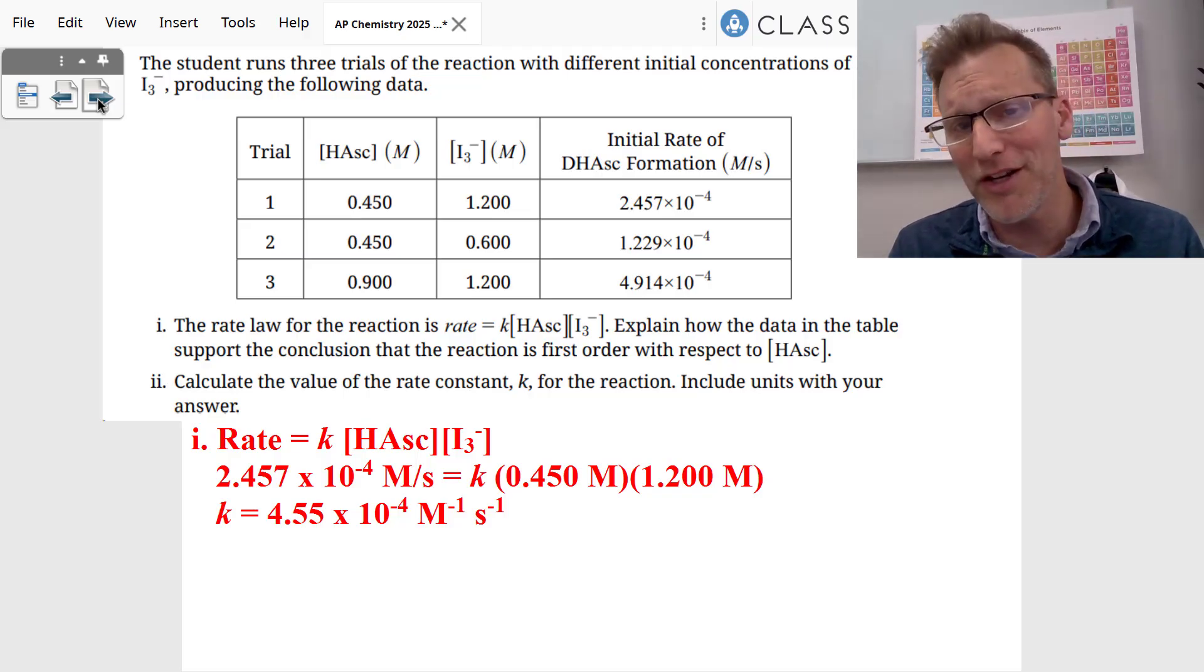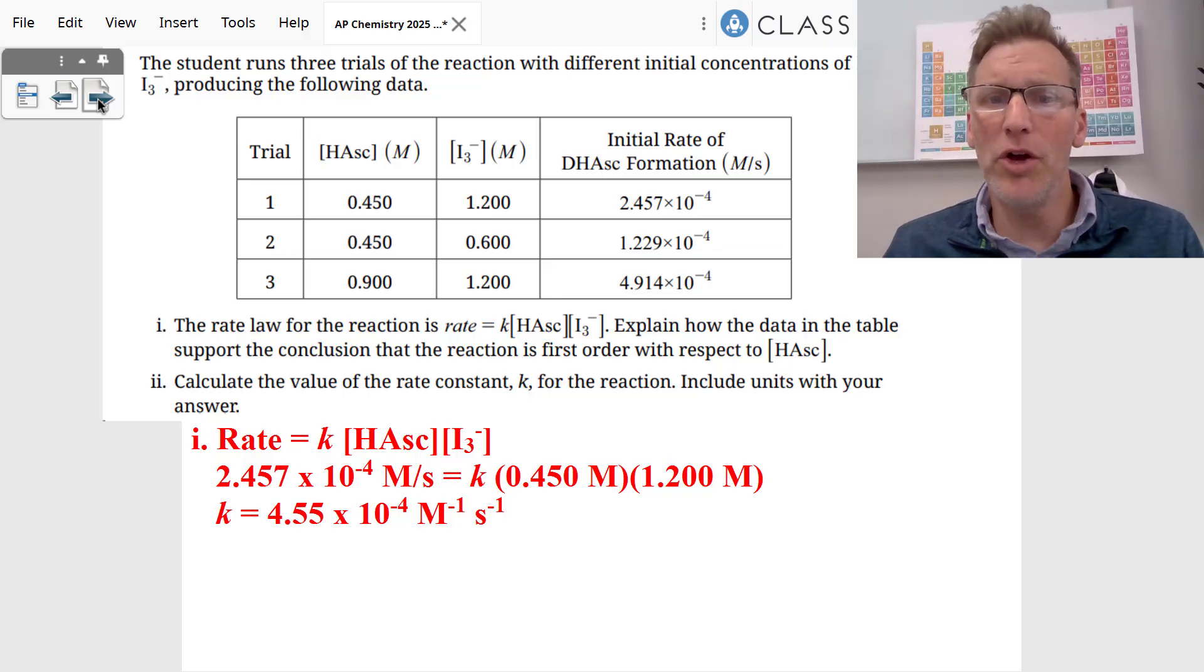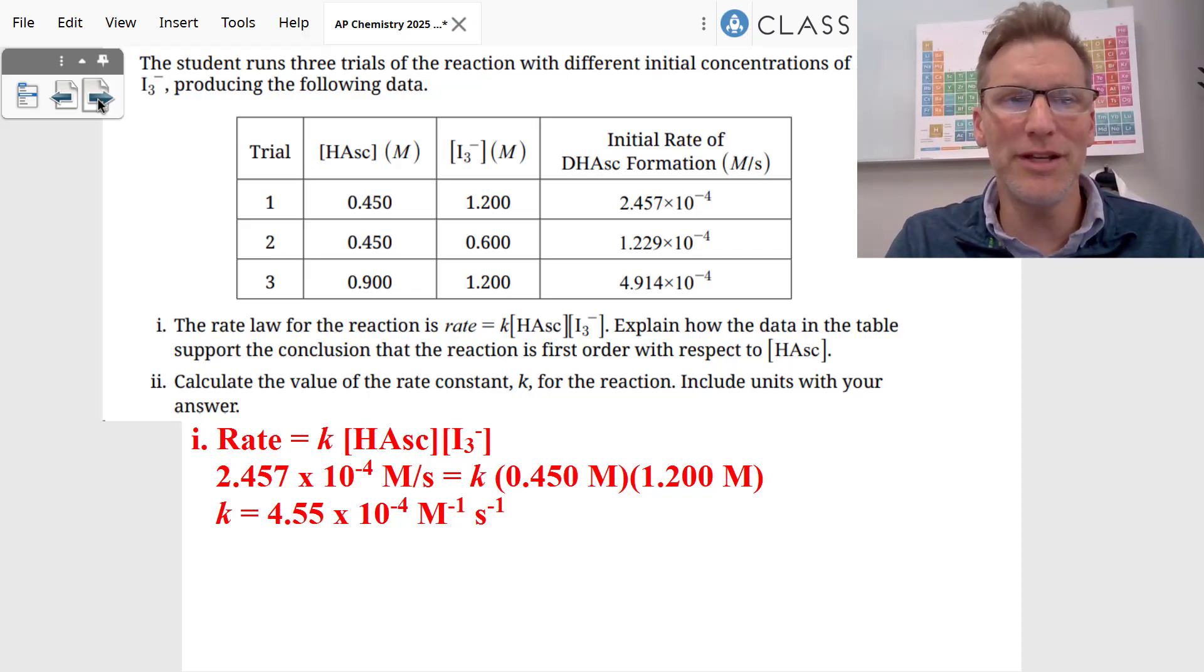What's the units? You're probably going to get a point for units. Well, if the rate is in molar per second and you have a molar and a molar, you got to get rid of a molar. So it's molar to negative one, seconds to the negative one.